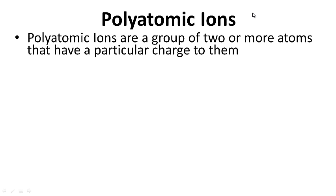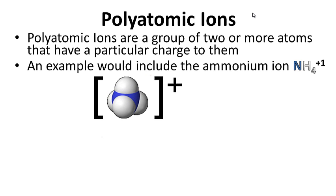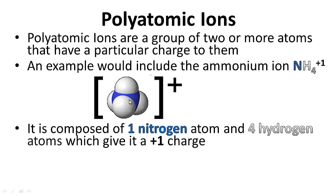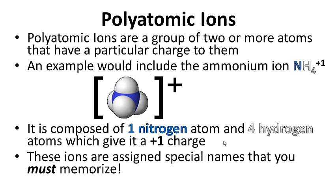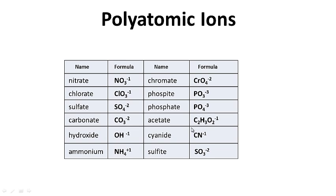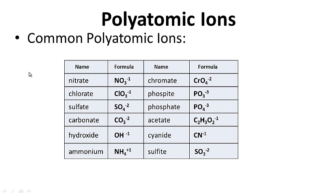Polyatomic ions are a group of two or more atoms that have a particular charge — think of it as a molecule with a charge. An example is the ammonium ion, NH4 plus one. The ammonium ion is composed of one nitrogen and four hydrogen atoms, giving it an overall charge of plus one. These ions are assigned special names that you must memorize — there are no rules. You simply must memorize their chemical formulas and names. Here are the common polyatomic ions you need to memorize. I recommend getting some flashcards.